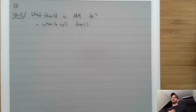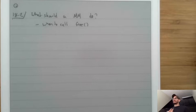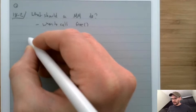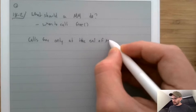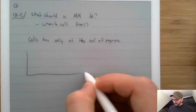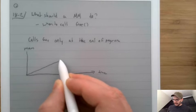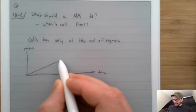Let's think about some strategies for memory management. The simplest memory manager we could define is one that calls free only at the end of the program. If we made a graph with time on the x-axis and memory on the y-axis, the program would just allocate, allocate, allocate until it's over, then sharply drop to zero.